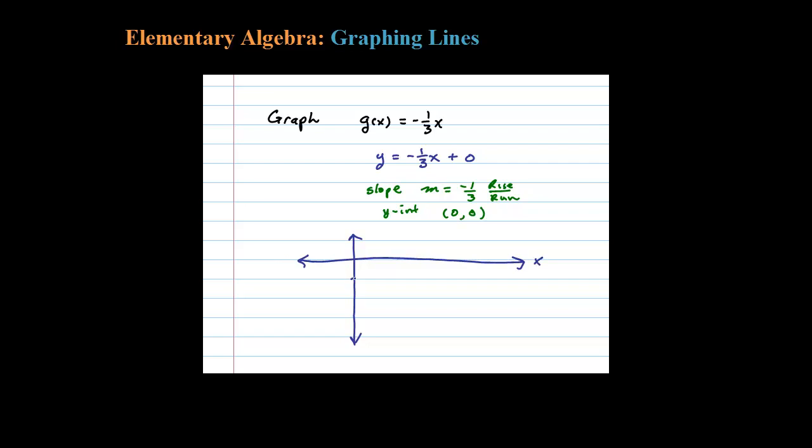So negative 1, negative 2, negative 3... 1 would be up there. There's my blank Cartesian coordinate system. The y-axis I'm going to call G(x).